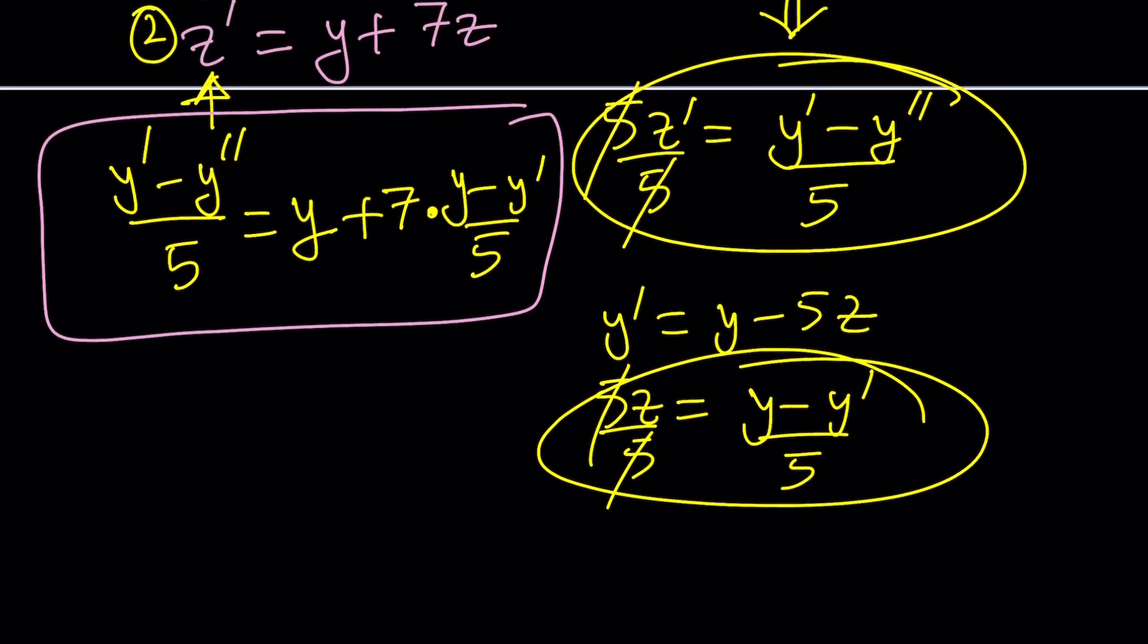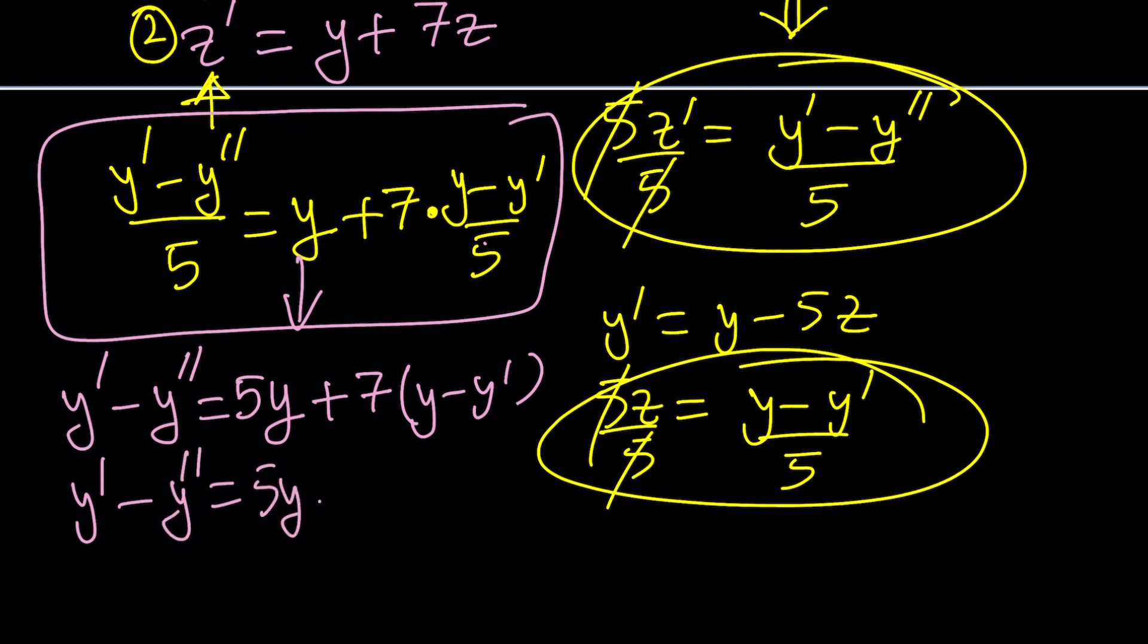Let's go ahead and multiply everything by 5. That would give us y prime minus y double prime equals... Remember, we're multiplying everything by 5. So, that would become 5y from here. And then, the 5 in the denominator would cancel out, leaving us with 7 times y minus y prime. And then, we're going to go ahead and distribute the 7. That would give us plus 7y minus 7y prime.